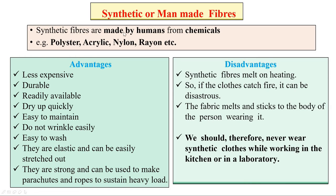Now let's study about synthetic or man-made fibers. Synthetic fibers are made by humans from chemicals — for example, polyester, acrylic, nylon, rayon, etc. There are several advantages: they are less expensive, durable, readily available, dry quickly, easy to maintain, do not wrinkle easily, easy to wash, elastic, and strong enough to make parachutes and ropes to sustain heavy loads. However, one important disadvantage is that synthetic fibers melt on heating. If clothes catch fire, the fabric melts and sticks to the body, which can be disastrous. Therefore, we should never wear synthetic clothes while working in the kitchen or in a laboratory.